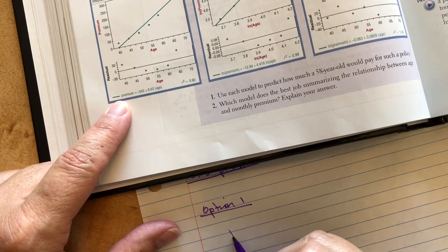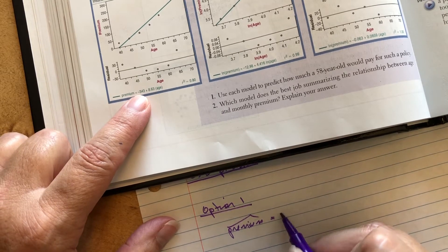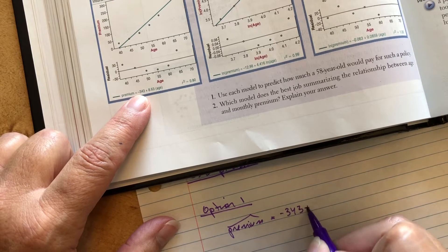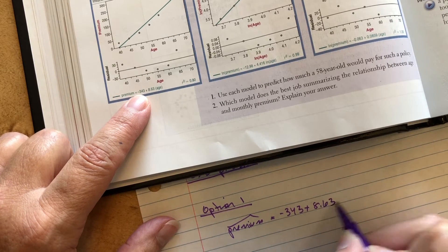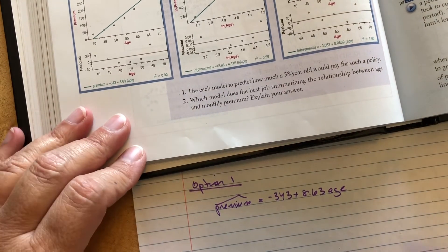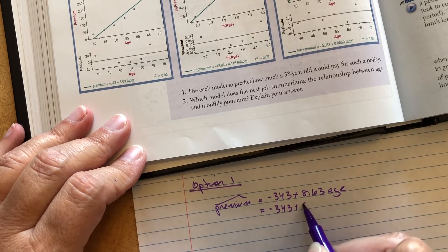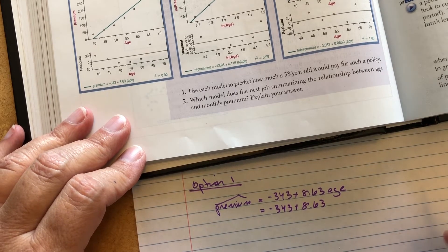So I'm going to do predicted premium is negative 343 plus 8.63 times the age. So there's my x and there's my predicted y. So to get my predicted premium, I'm just going to plug in, what was it, 58? It's for a 58-year-old person.